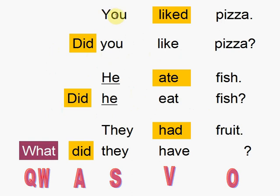You see the sentence: 'You liked pizza.' One of the symbols that the sentence is past is when it ends with a D, like here. So when you see a sentence with a verb, first of all you have to find the verb — in this case the verb is 'like' and it ends with a D. So this tells you that the verb is a past tense verb. You know that your sentence is past tense because it ends in the D.